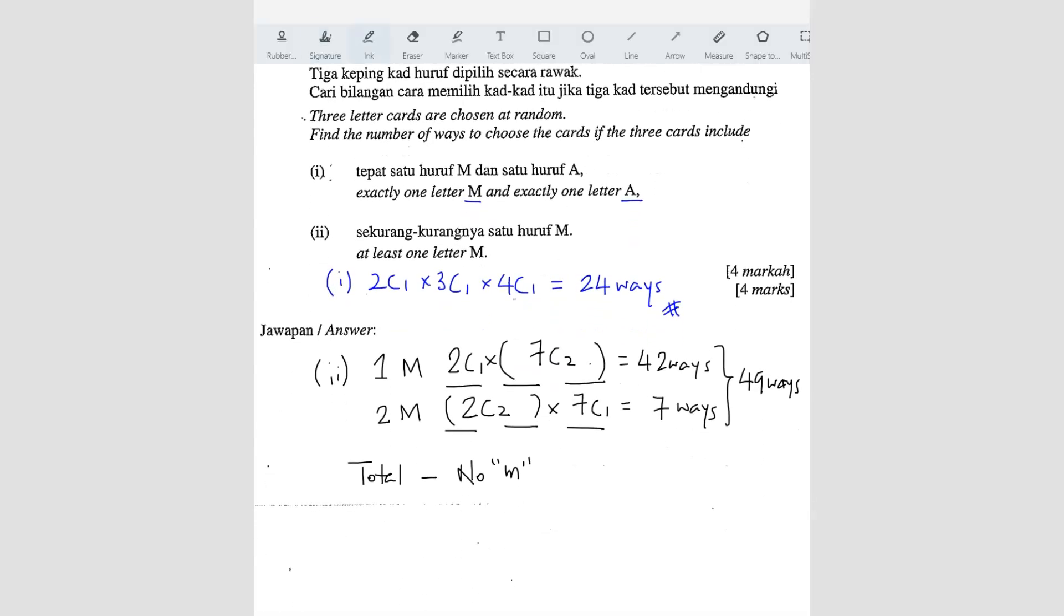The second way, the easier way is you find the total. Total means what? Total means you got 9 cards, right? So 9, you just have to choose 3. That is the total. Minus no M. So that means there are 9 cards, right? 2 of it is M. So that means if I don't have any M, that means I'm left with 7 other cards and I just have to choose 3. All 7 cards not including the M and then choose 3 to fill up the 3 slots. So when you minus them, you should get your answer 49 ways.